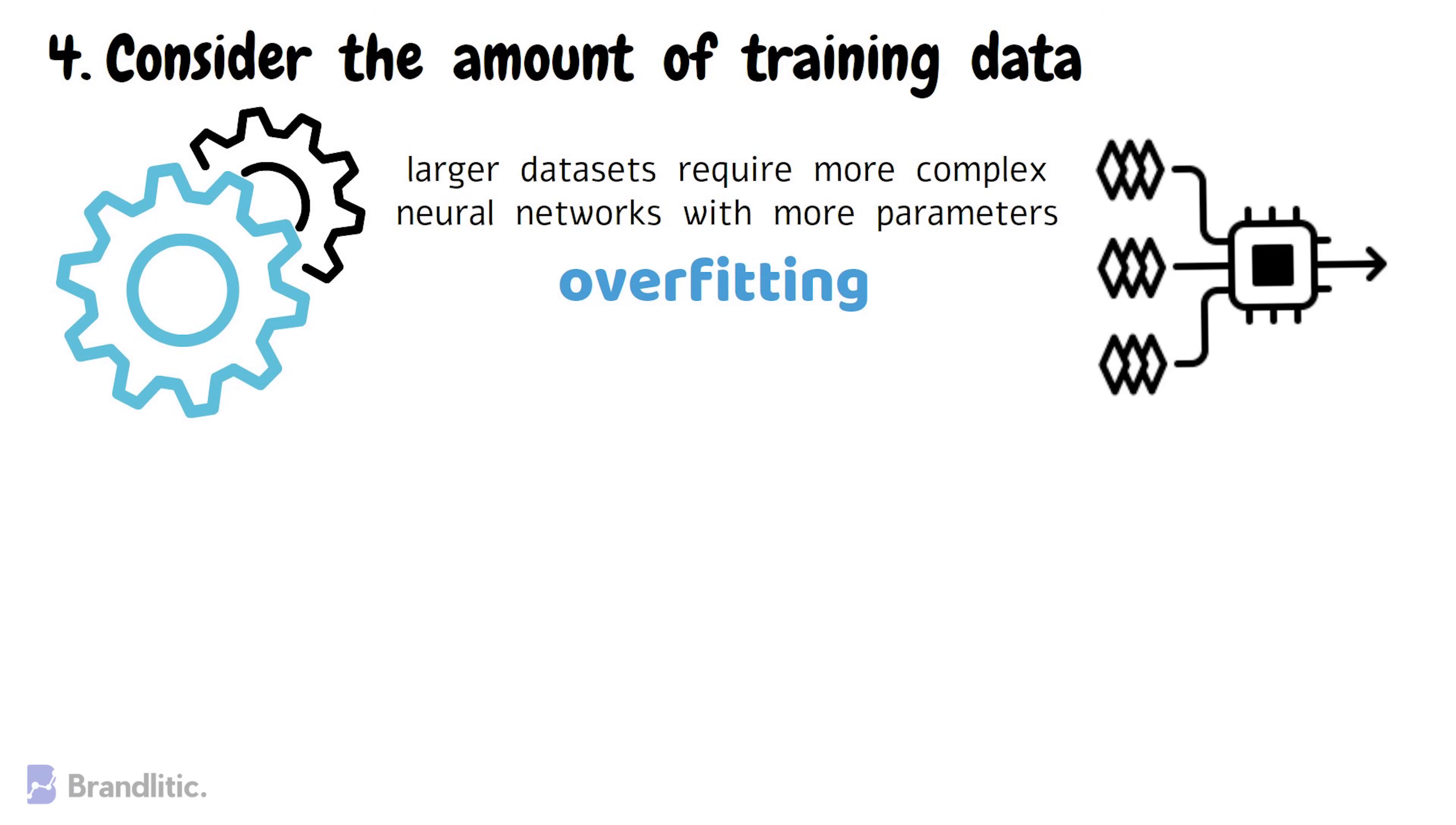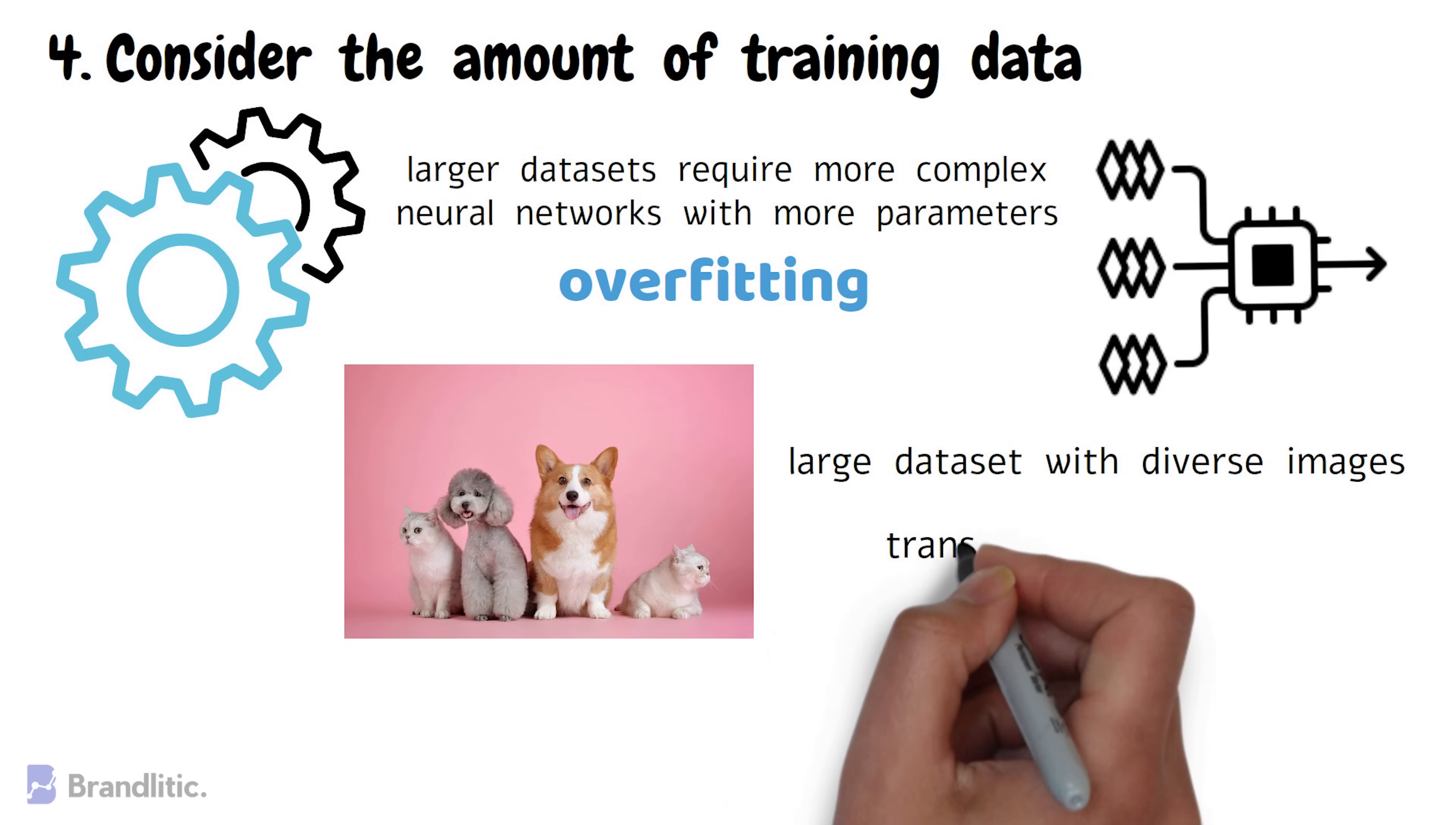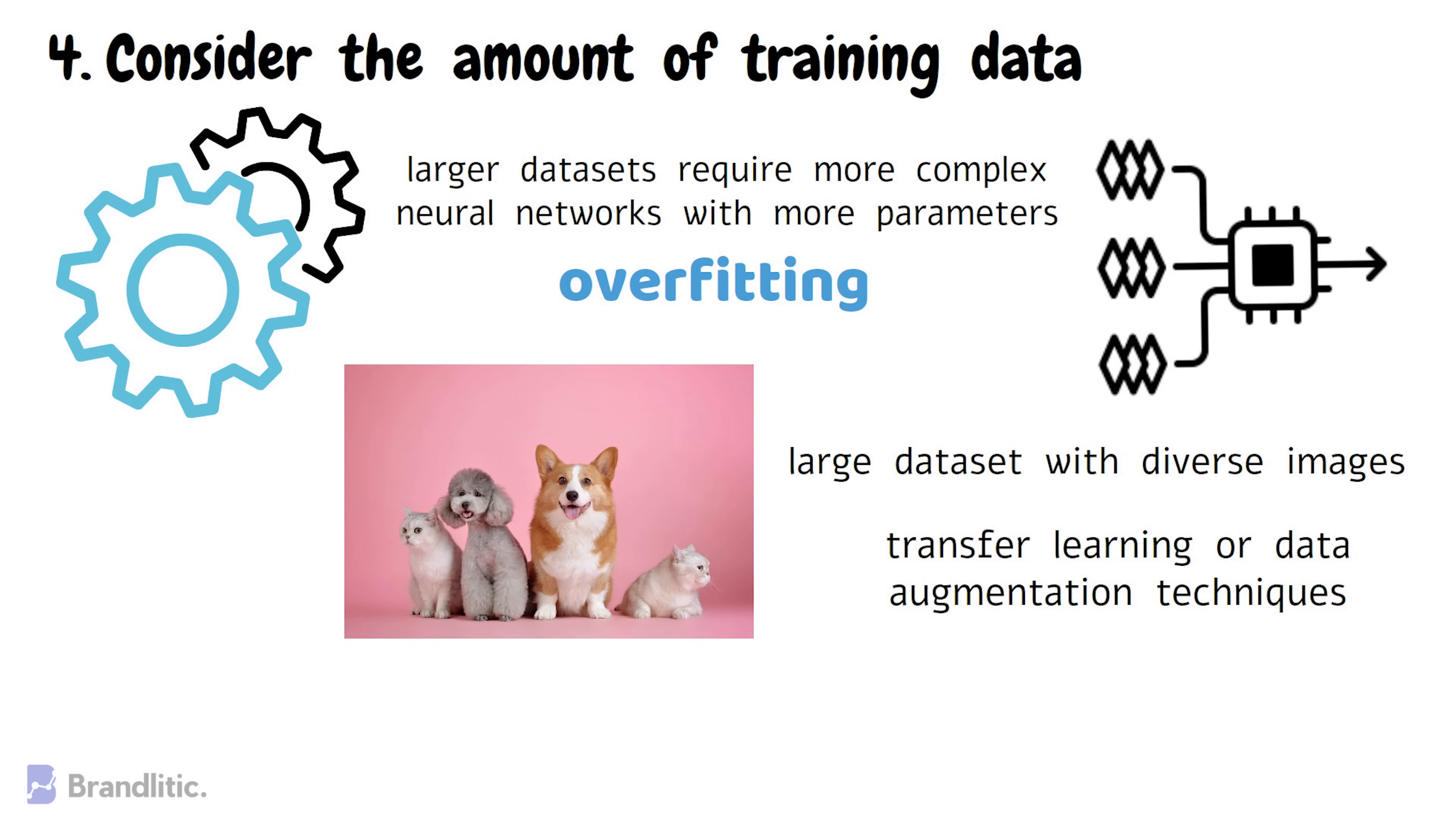For example, if you want to classify images of cats and dogs, a large dataset with diverse images is needed for effective training. But if we have a small dataset, then we may have to use transfer learning or data augmentation techniques. On the contrary, by using large datasets, we can build complex neural network architectures with more deep layers for better performance like ResNet or Inception.